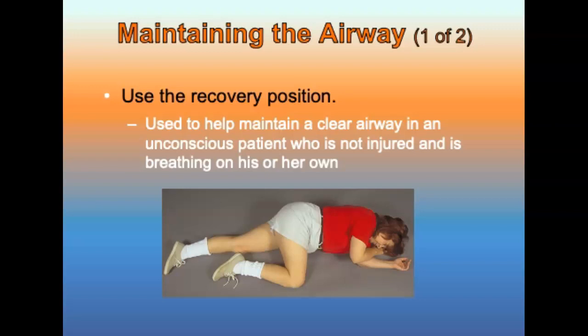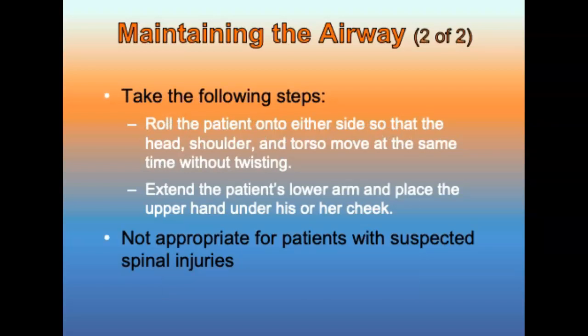The recovery position is used to help maintain an airway in an unconscious patient who is not injured and is breathing on their own with a normal respiratory rate and adequate tidal volume. To place a patient in the recovery position, roll the patient on either side so the head, shoulders, and torso move at the same time without twisting, and extend the patient's lower arm while placing the upper hand under their cheek. For patients who have resumed spontaneous breathing after resuscitation, this position prevents aspiration of vomit. It is not appropriate for patients with suspected spinal, hip, or pelvic injuries.